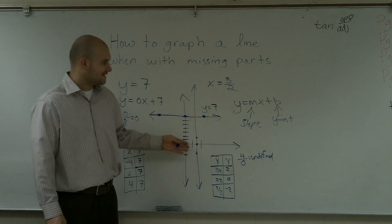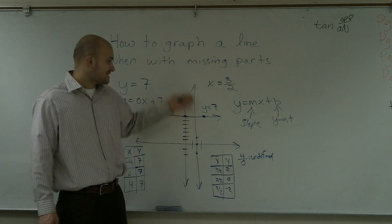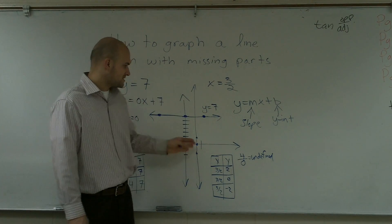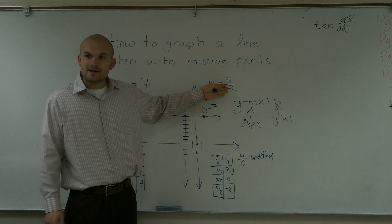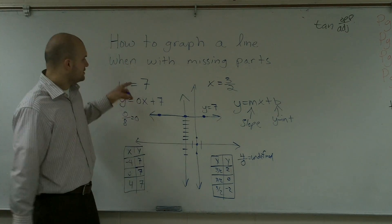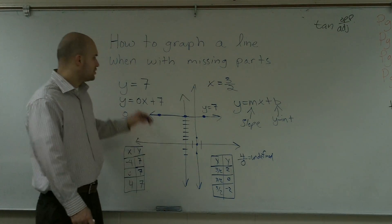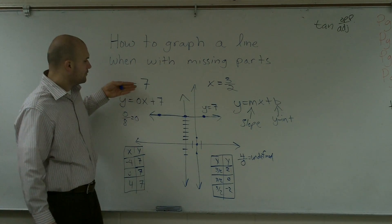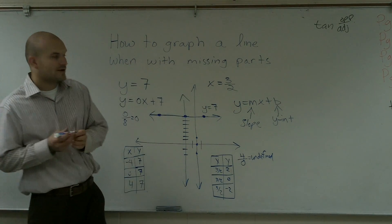That's why you're not going to see x equals 3 halves in y equals mx plus b form — it doesn't have a y-intercept, it never crosses the y-axis, and the slope is undefined. So when graphing lines where you're just given y equals a number or x equals a number: y equals a number gives you a horizontal line, and x equals a number gives you a vertical line. That's how you graph a line when you have missing parts.